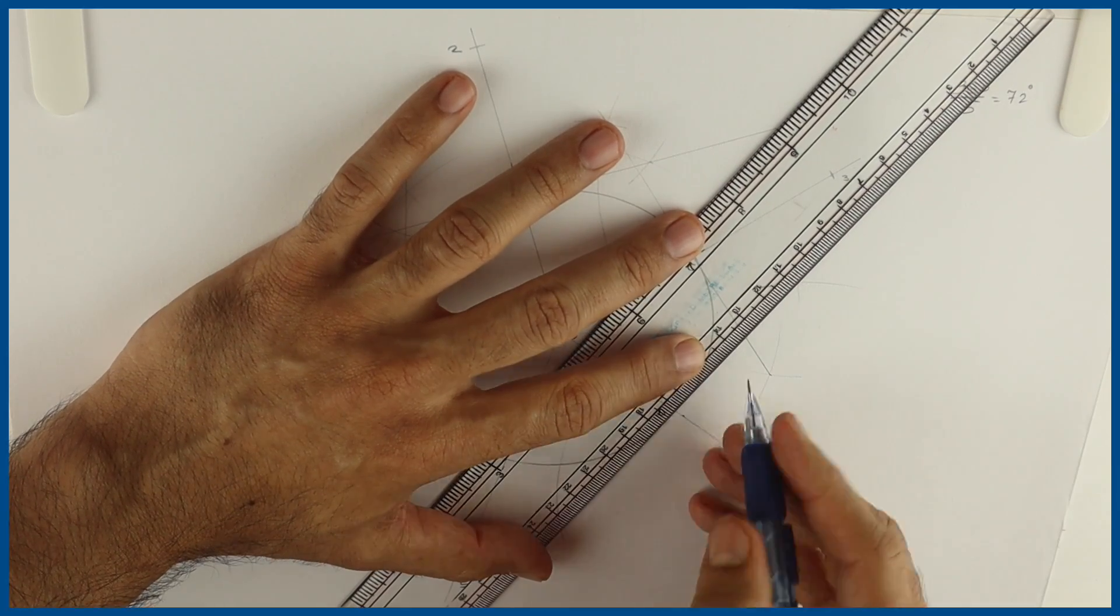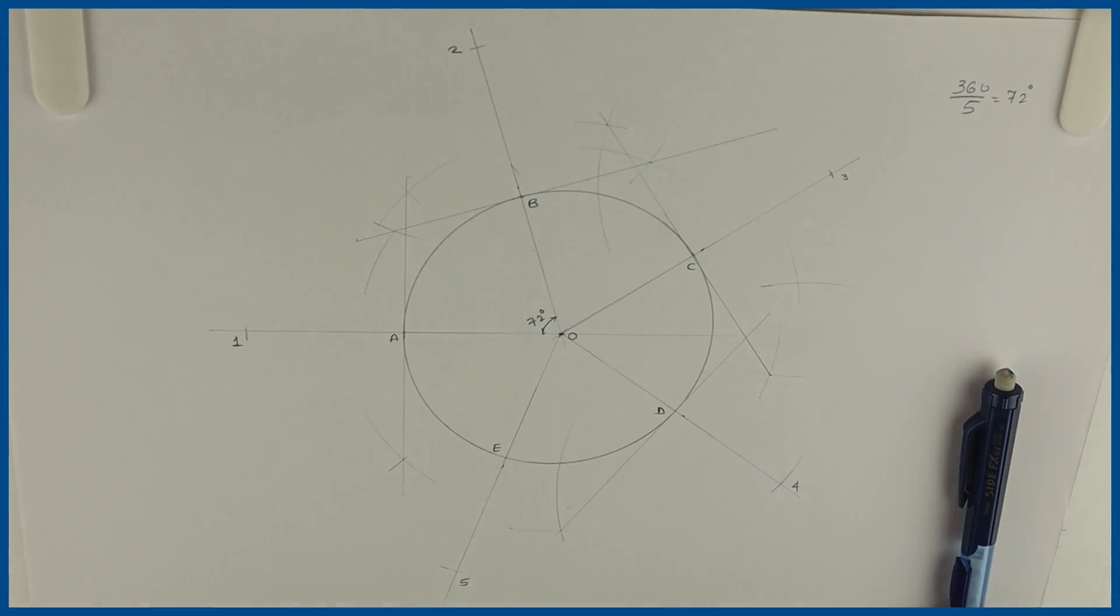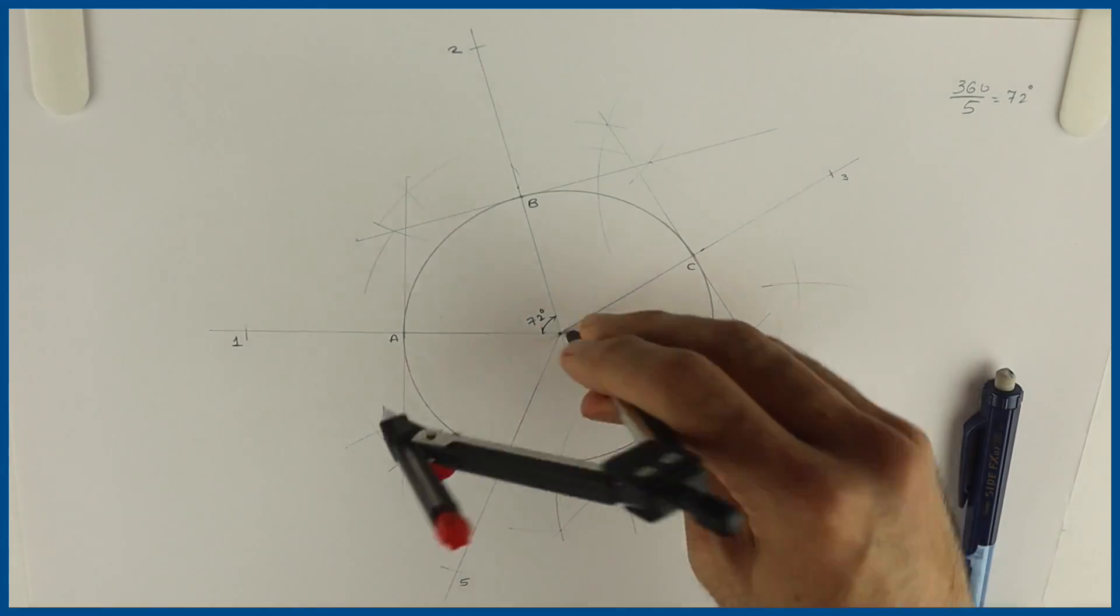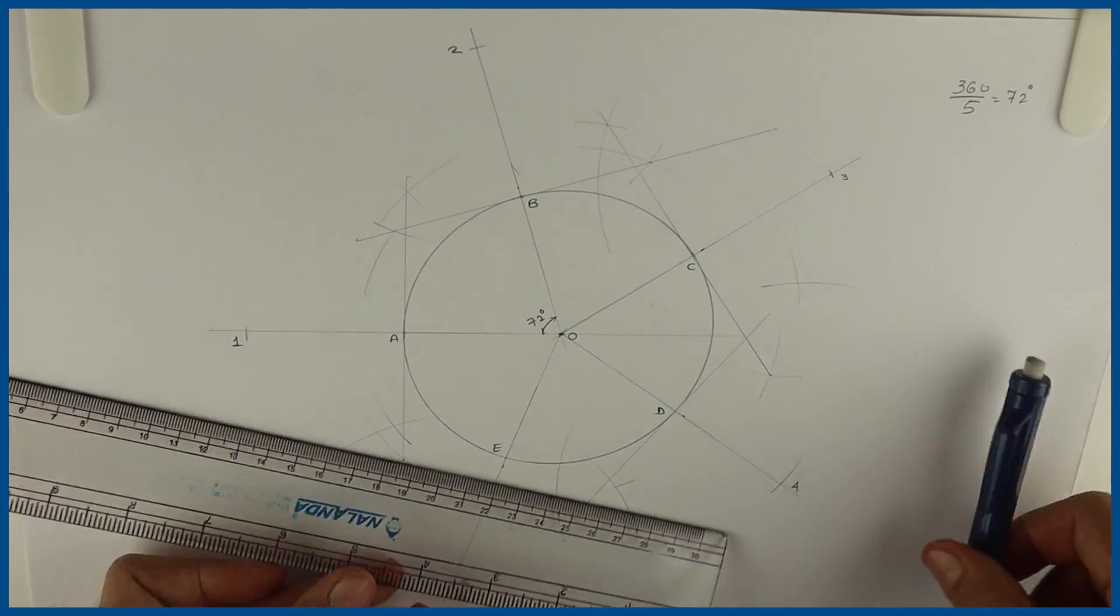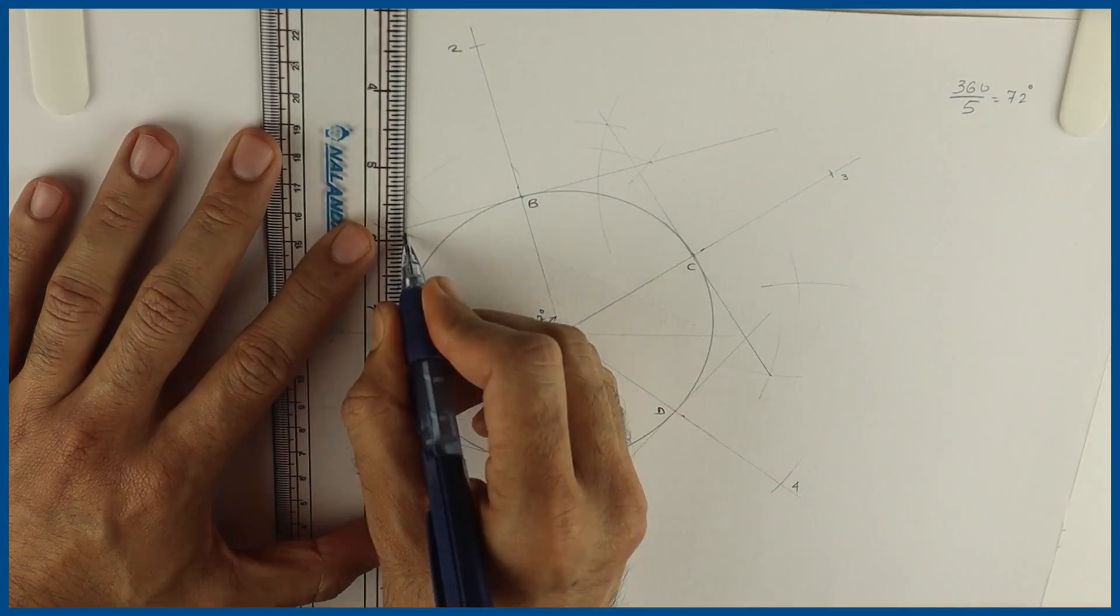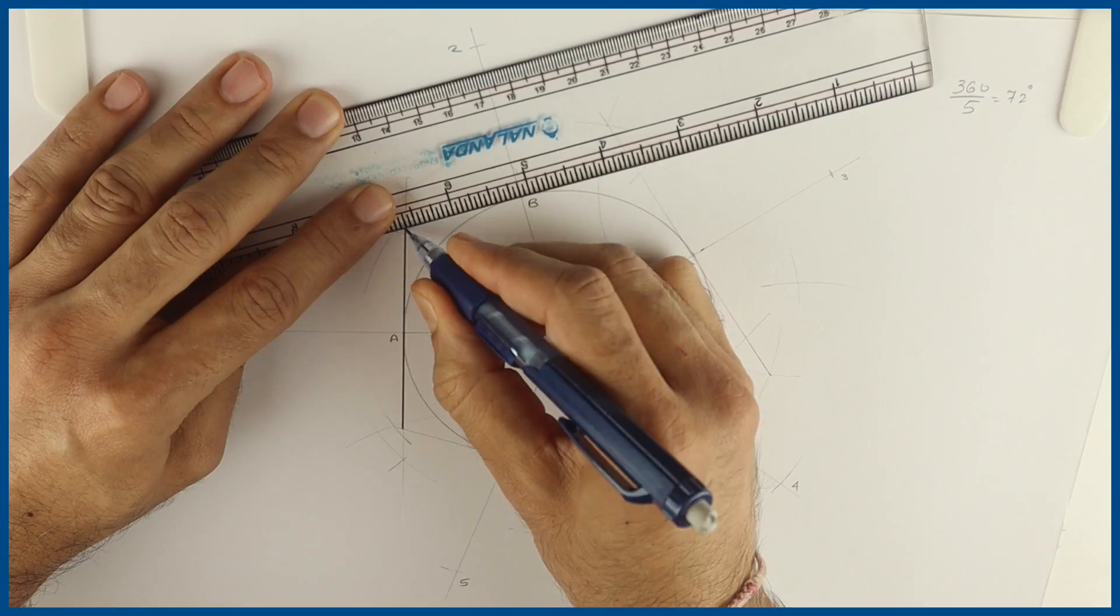So this way we got pentagon. See this. Bisect O5. So we got pentagon. We can darken it.